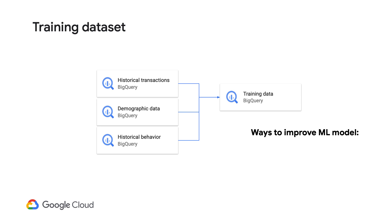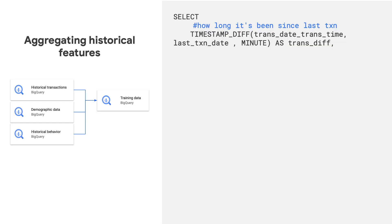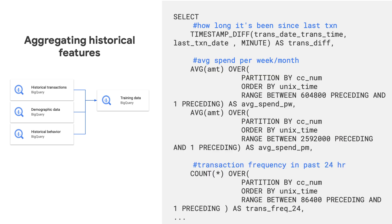This is perhaps just a starting point. In reality, you may want many more features and to improve your model in other ways like model selection, hyperparameter tuning, or model ensembling — all possible with BigQuery ML. In this design pattern, we show you how to get started with a few extra aggregate features of customer activity, such as how long it's been since their last transaction, the average spend on the credit card per week or per month, and the number of transactions on average in the last 24 hours, as examples of what you could do.